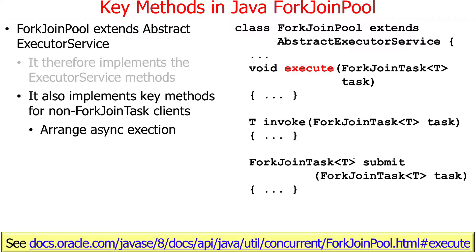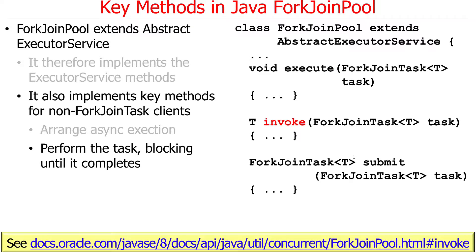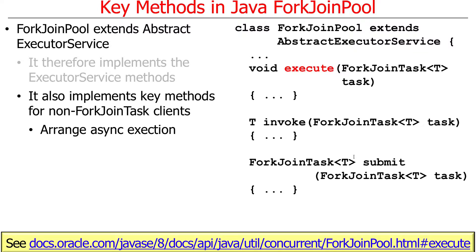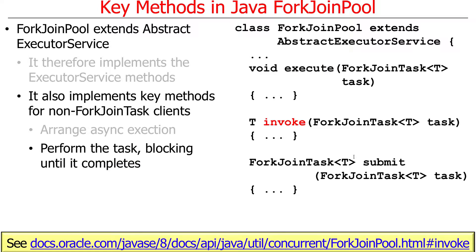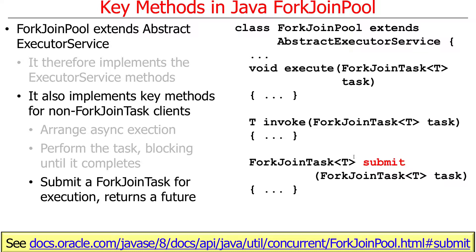Execute will arrange an asynchronous execution with no result coming back—it just executes the ForkJoin task, which needs to have some side effect if it wants any impact. Invoke will perform the ForkJoin task and block until the task is complete, returning element type T as the result. Execute does not return a value and doesn't block, whereas invoke does. Submit takes a ForkJoin task, arranges it to run, and returns a Future to the result, which you can then obtain through other means.